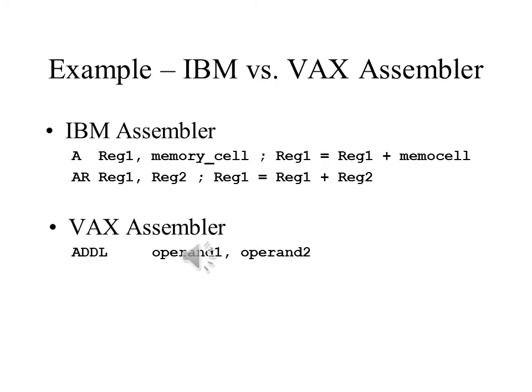IBM Assembler is not orthogonal, because the use of values in both memory and registers requires a different instruction from the case where the operands are both in registers. The VAX instructions are orthogonal, because the location of the operand is irrelevant — you still use the same instruction.